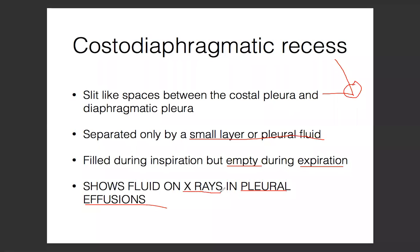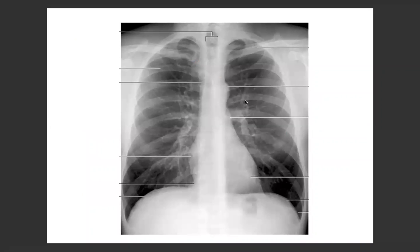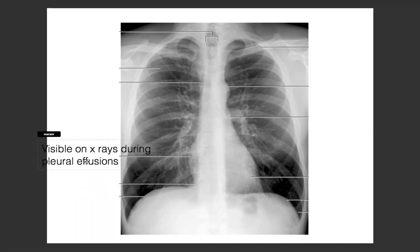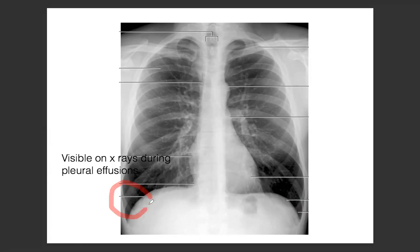You'll usually see this on x-rays. If you do an x-ray and see fluid in the costodiaphragmatic recess, that means the person has a pleural effusion. Questions could ask you to identify this area on an x-ray and state its clinical importance - the answer is that it's visible on x-rays for pleural effusions. It's a very common question, especially during the x-ray station where they could ask you about the costodiaphragmatic recess.